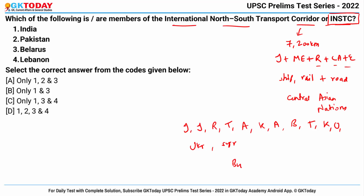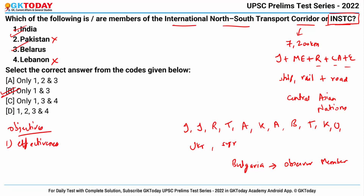Bulgaria is an observer member of INSTC. Pakistan and Lebanon are not members. The correct answer is only one and three. The objectives of INSTC include: increasing effectiveness of transport ties to organize goods and passenger transport; promoting access to international markets through road, rail, sea and air transport; and providing security of travel and safety of goods.